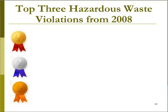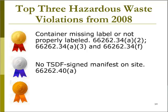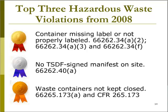The rest of this section of the EPIC Plus presentation will focus on the three most common hazardous waste violations. These violations include: number one, a container with a missing or incomplete label; number two, not having a manifest on site that was signed by the treatment storage disposal facility accepting the waste for disposal; and number three, open hazardous waste containers.